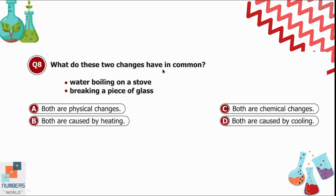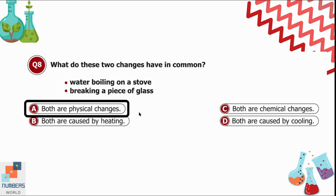Question 8: What do these two changes have in common — water boiling on a stove and breaking a piece of glass? Option A is both are physical changes. Option B is both are caused by heating. Option C is both are chemical changes. Option D is both are caused by cooling. Option A is correct: in both activities, a physical change occurs — the physical appearance of water and glass will be changed.